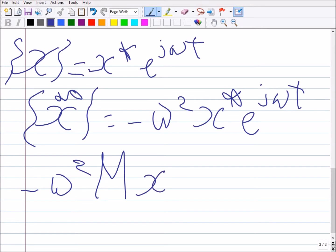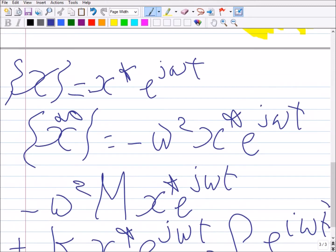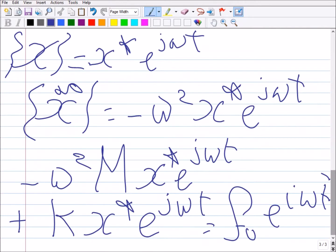So we ended up here with a relation in which we can simply remove the e^(jωt) from both sides, and we end up with an algebraic relation.